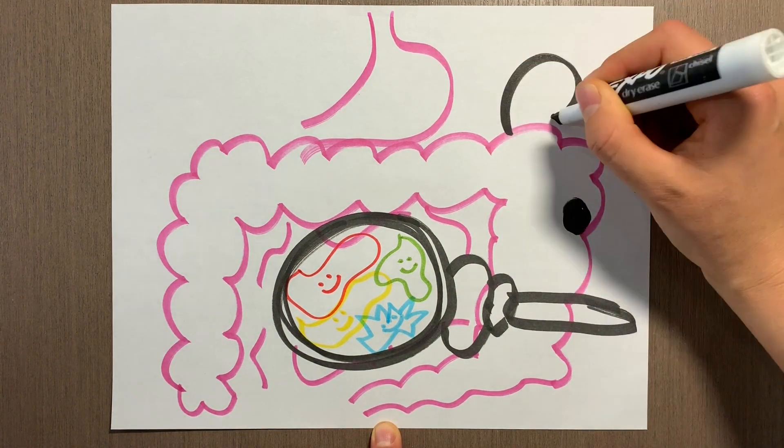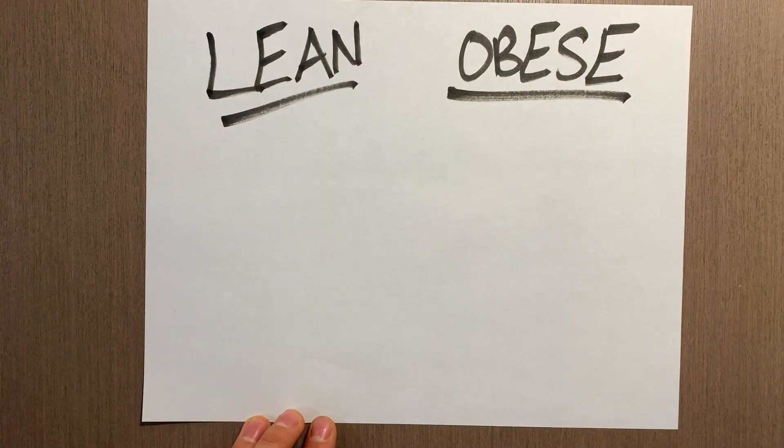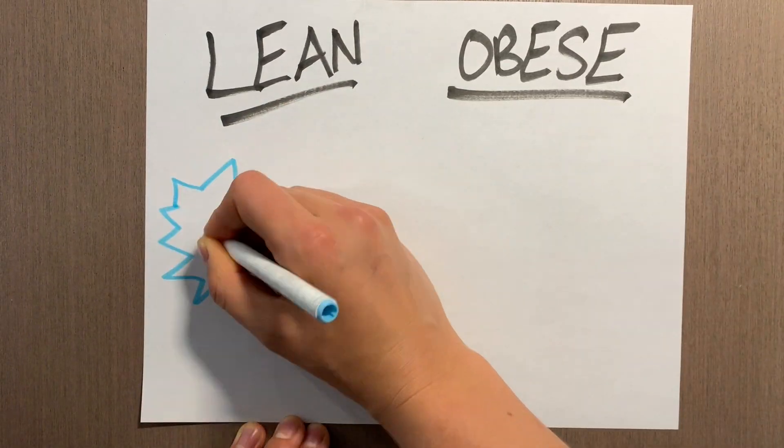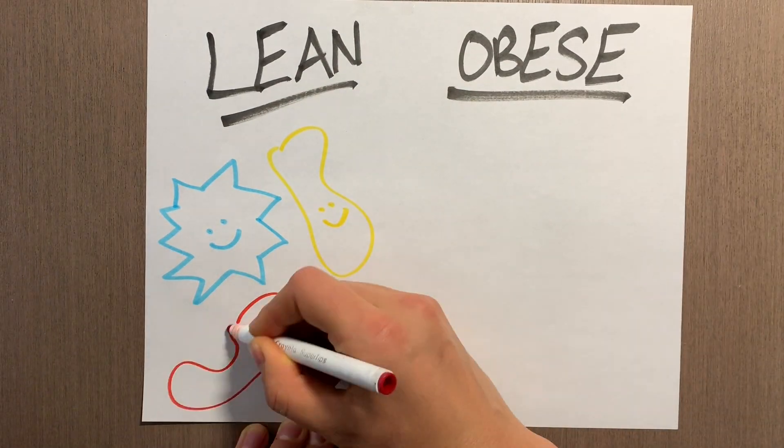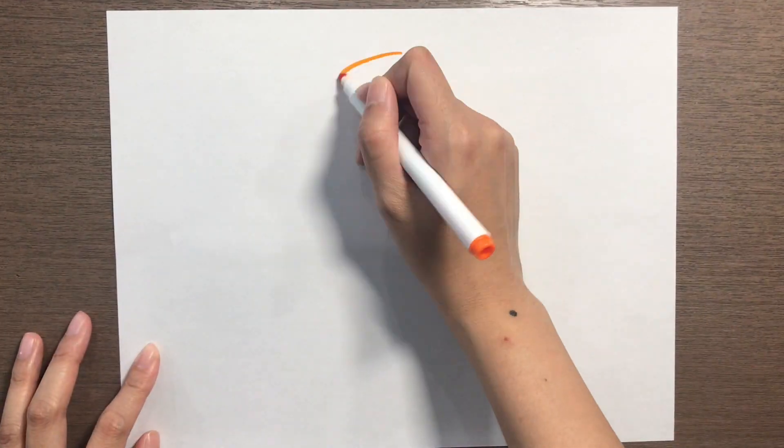Now why do we think the two are related? Well, the gut microbiota in obese individuals is often altered in that it is less diverse than that of a lean individual.